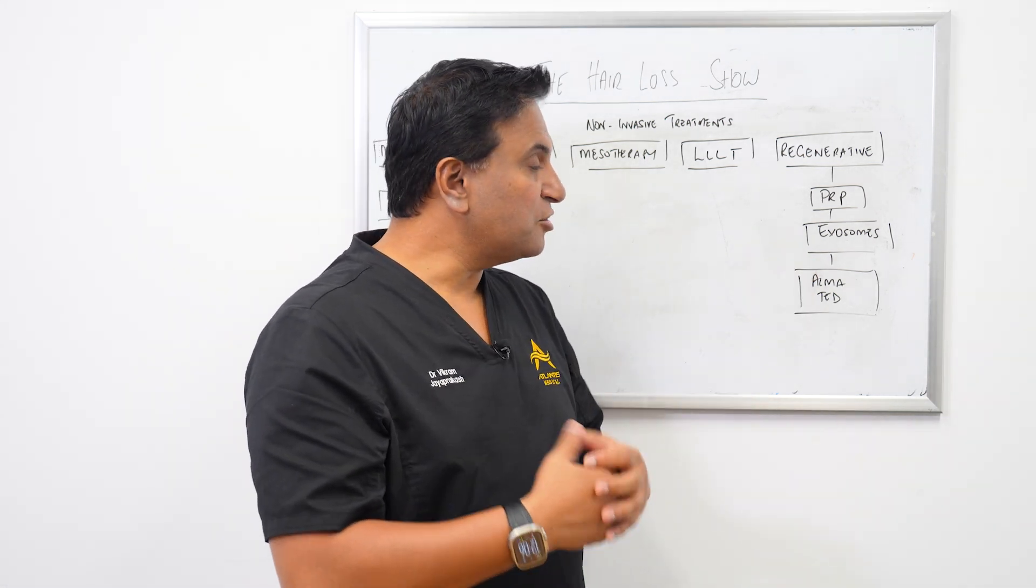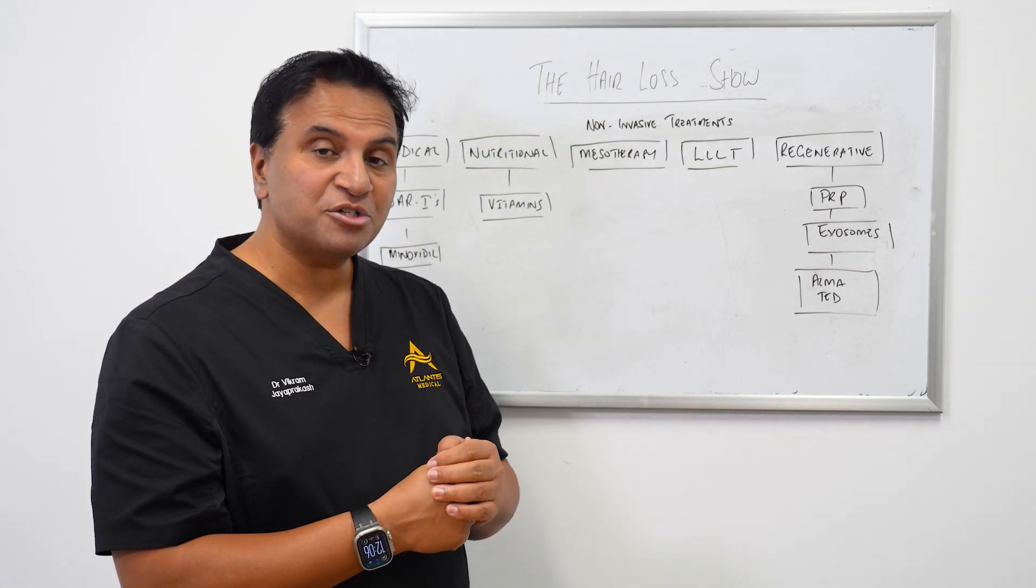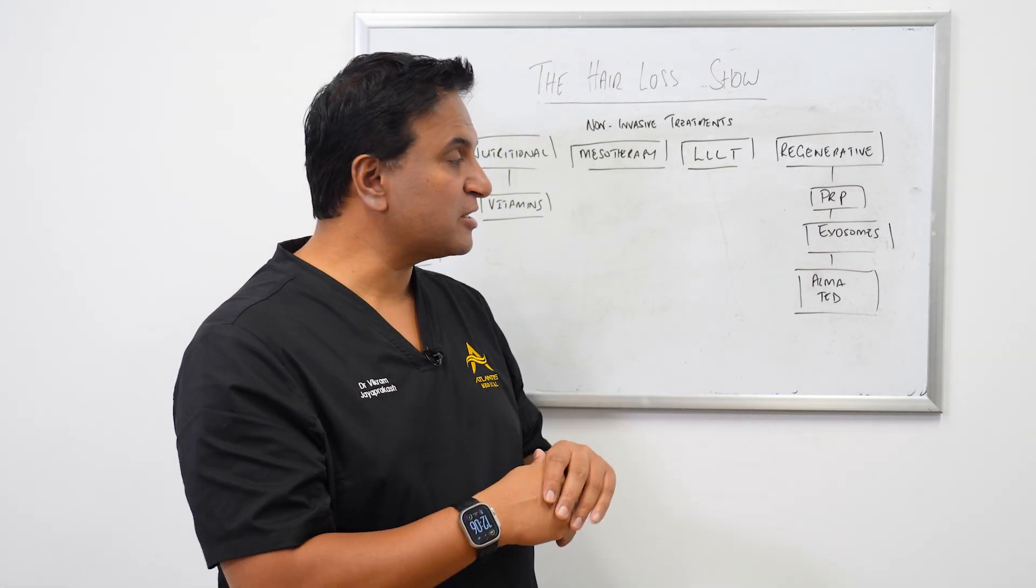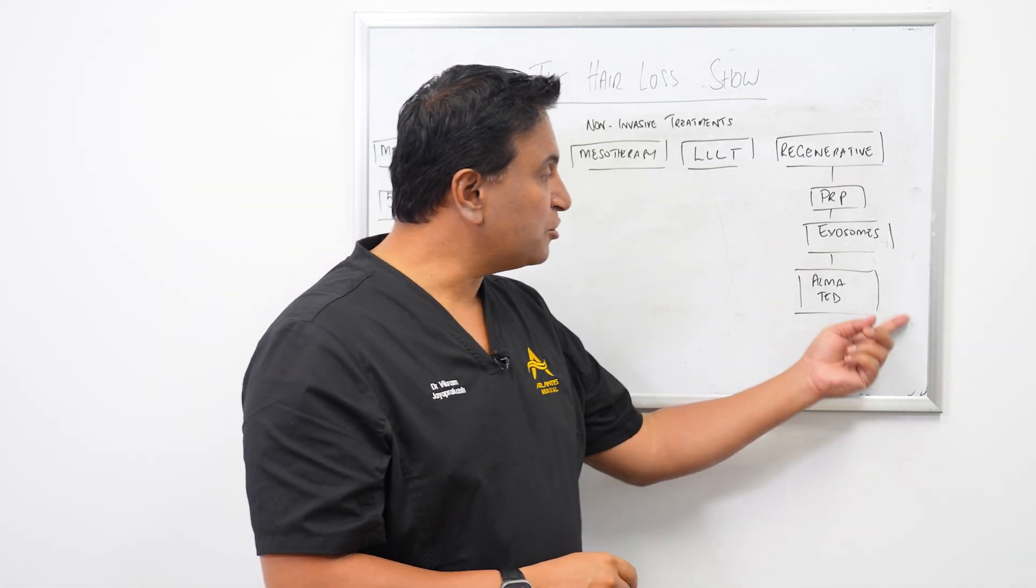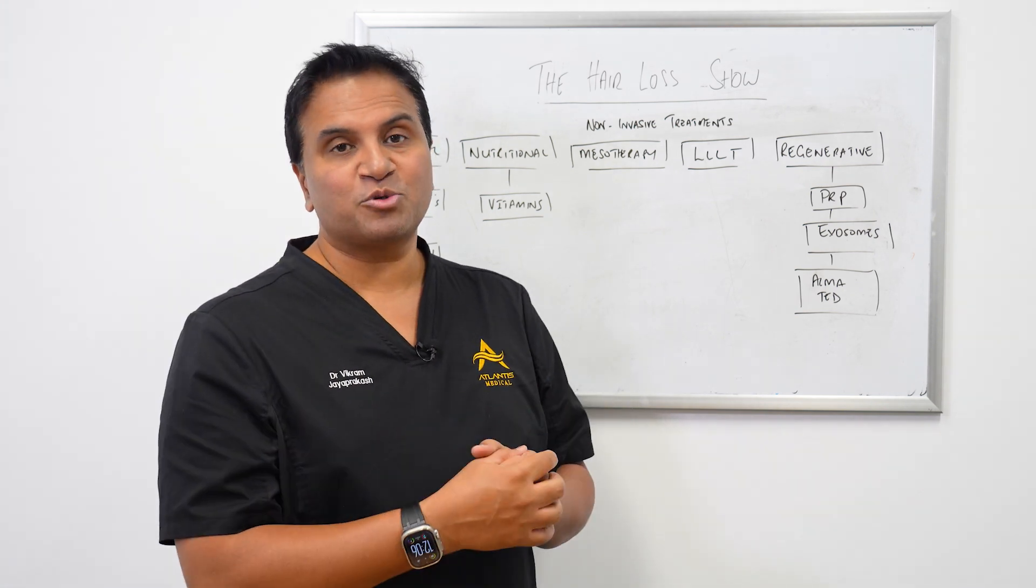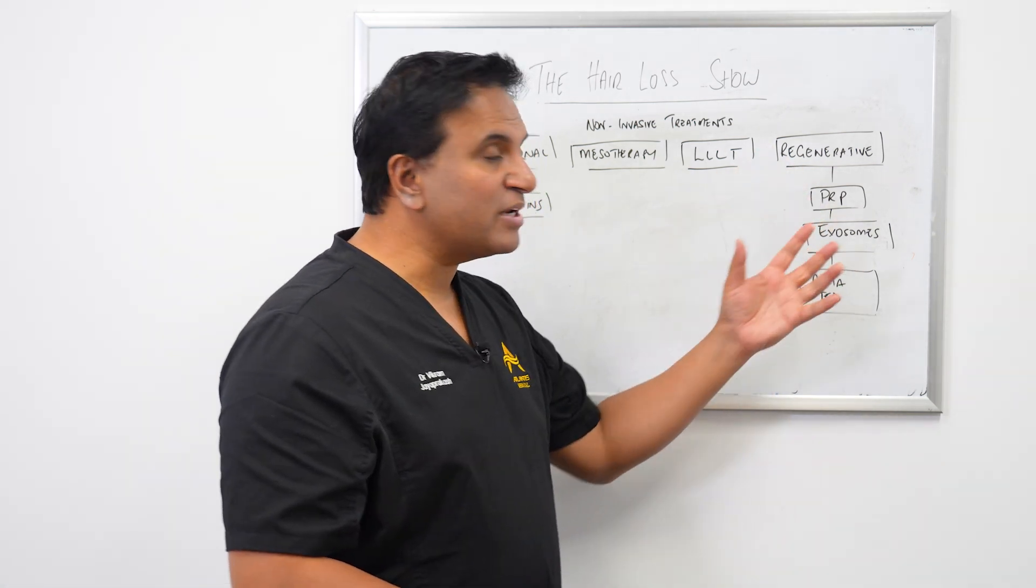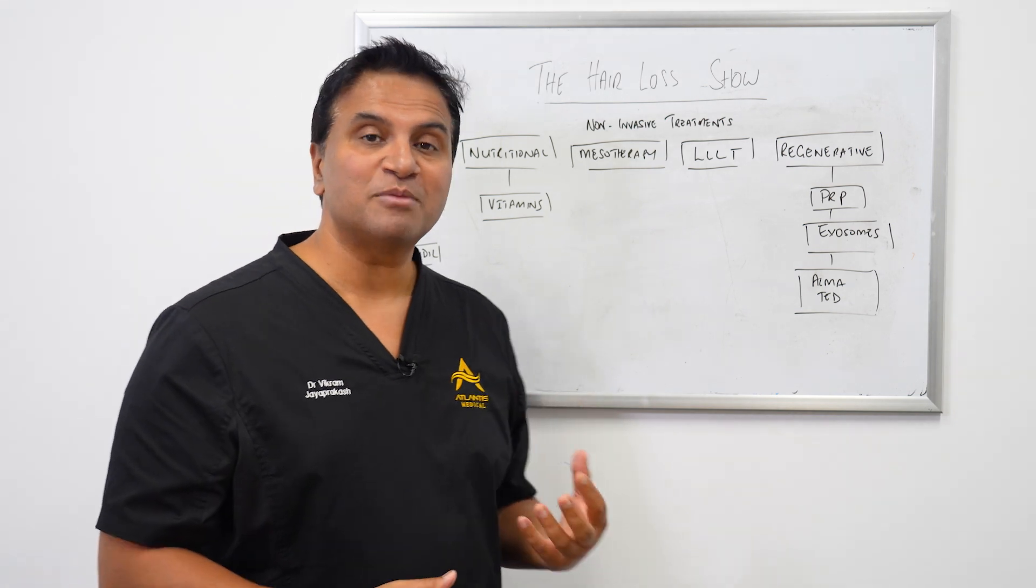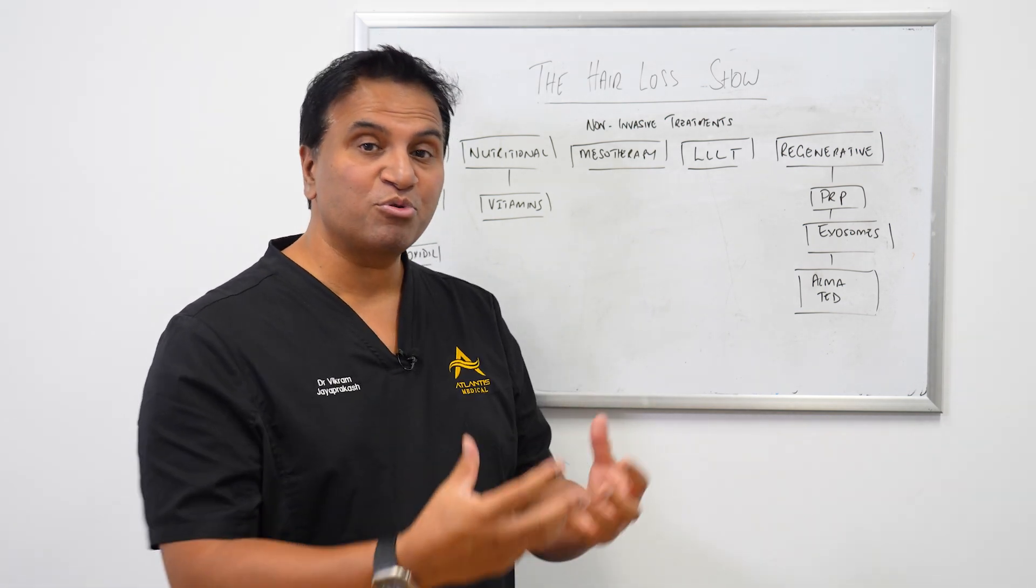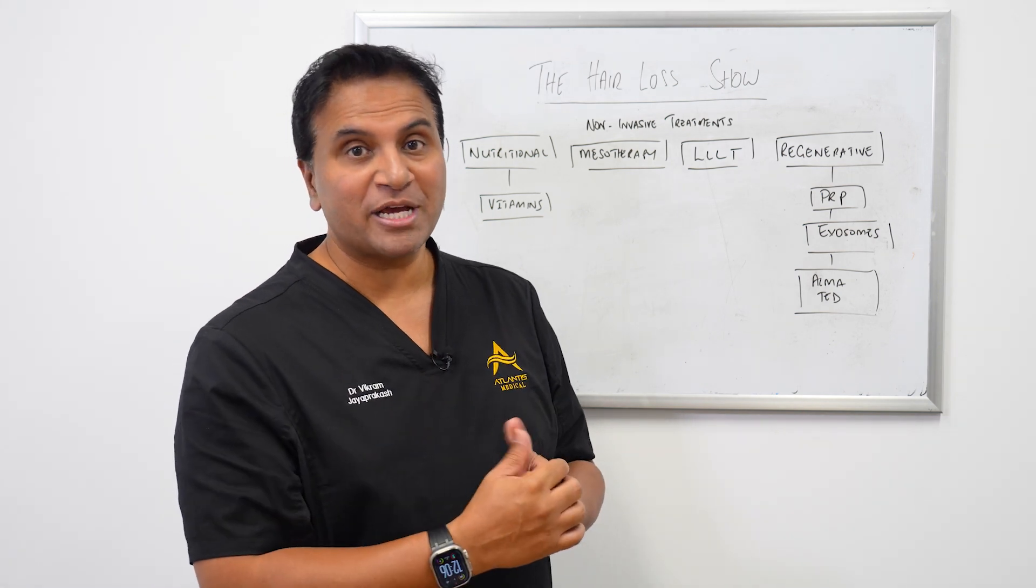There's a newer form of treatment called exosomes, which are basically little messengers that will be transported to the hair follicle, and another new type of treatment called the Alma Ted as well which really does help transport molecules across. These are showing a lot of promise in terms of improving hair quality, hair strength, and reducing shedding as well.